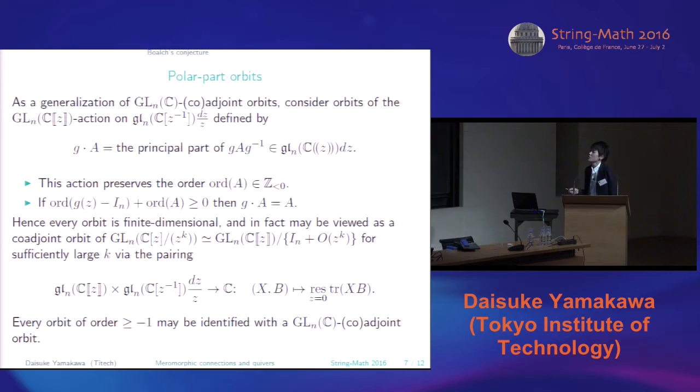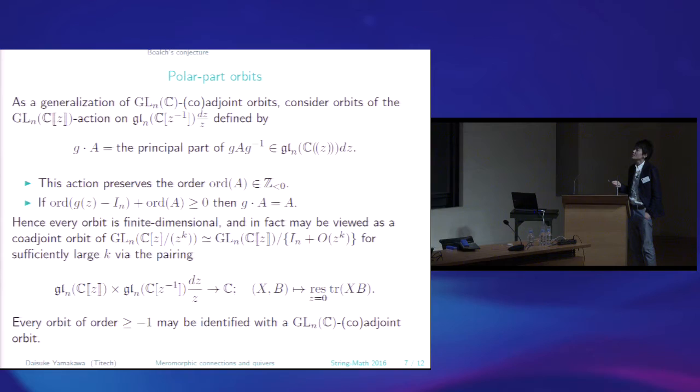Okay, so let's go to the non-logarithmic case. As a generalization of conjugacy classes of the matrix, consider orbits of the action of GLN over the formal power series ring on the space consisting of local one-forms having no holomorphic part, defined by G dot A equal to the principal part of G A G inverse. So let us take the principal part. Then it lives in this space. And it gives an action.